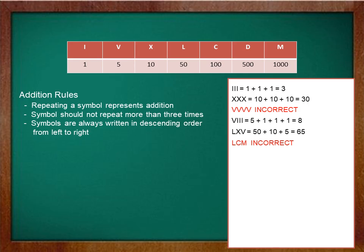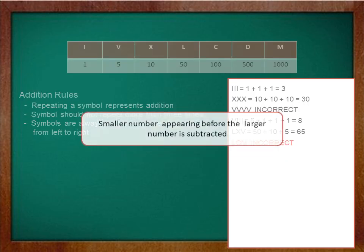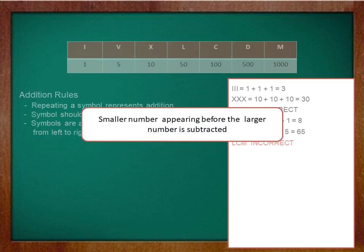Now let's move on to subtraction rules. First one says smaller number appearing before the larger number is subtracted. Let's start with a simple example that is IX. Since I is smaller than X, we would subtract I from X which is equal to 10 minus 1 which is equal to 9.